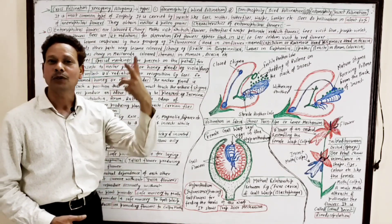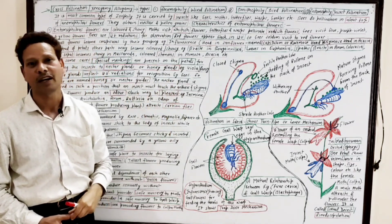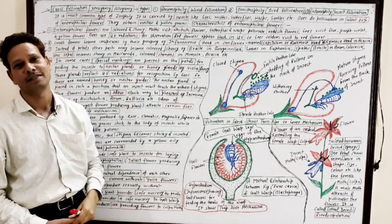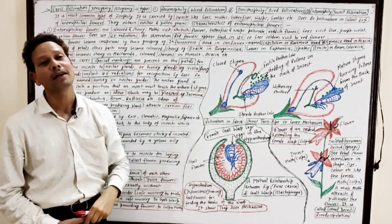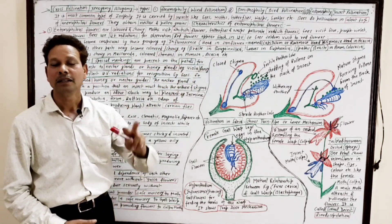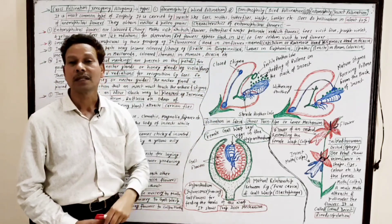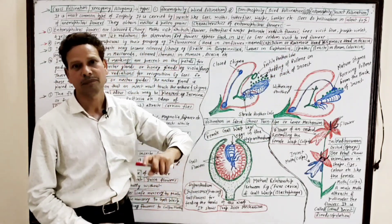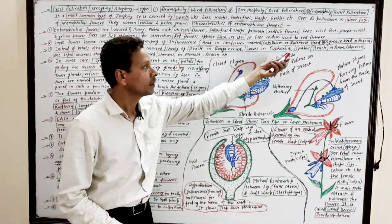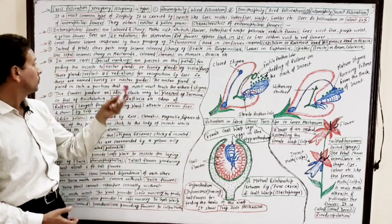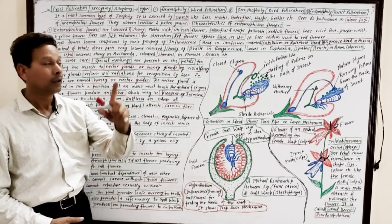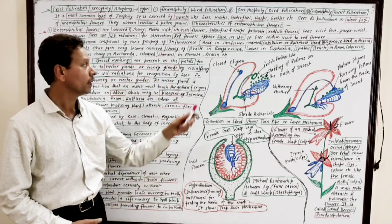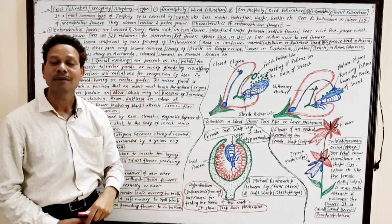In a flower, sepals are generally greenish in color while petals are colored. But in some cases, instead of petals, other parts of a flower may become colored. As in bougainvillea, the bract becomes colored. Leaves become colored in the case of Euphorbia milii. A spathe, which is also a bract, becomes colored in the case of Arum, Colocasia (kachalu), and Mussaenda. In the case of mimosa and acacia, the stamens become colored.